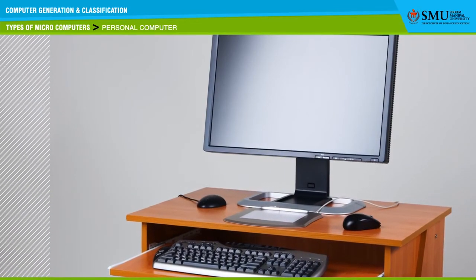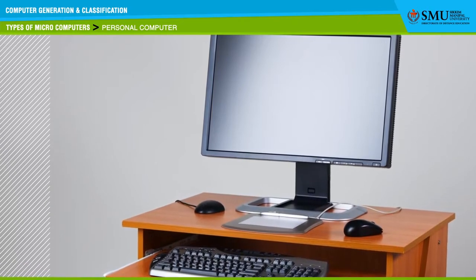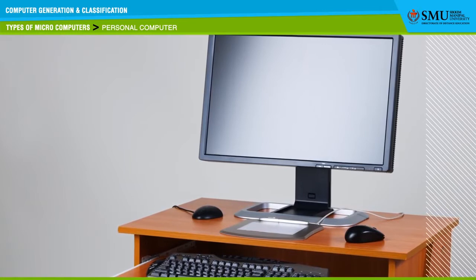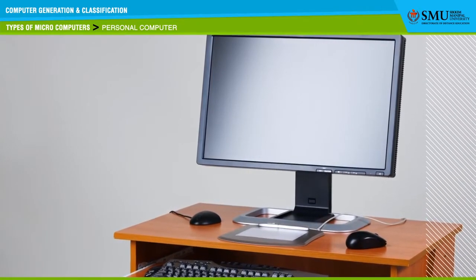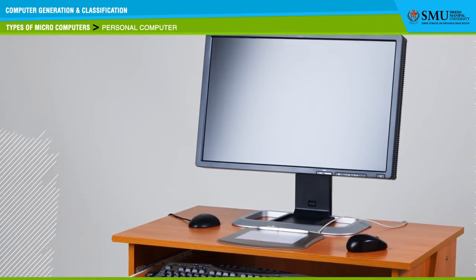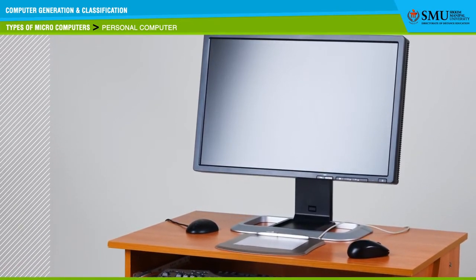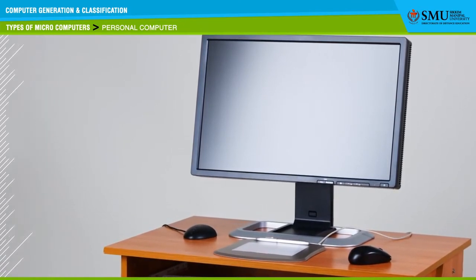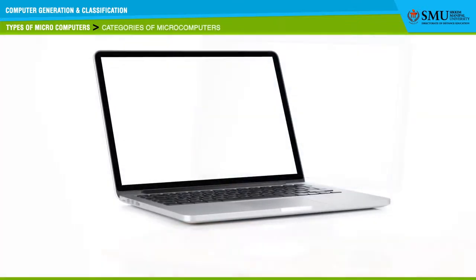Another model of the personal computer is known as the Tower personal computer. The system unit CPU of the tower PC is vertically placed on the desk or table. Usually the system unit of the tower model is placed on the floor to make desk space free, and the user can place other devices such as the printer, scanner, etc. on the desktop. The tower models are mostly used at homes and offices.